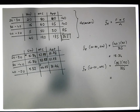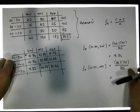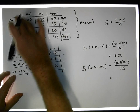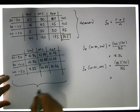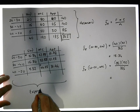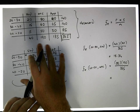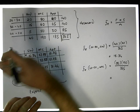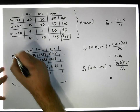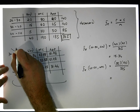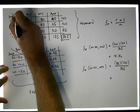We can actually start the hypothesis test now. What we've done is we know what we've observed — those are our observed values. These here are what we expect to happen if the variables are independent of each other. This is what we'd expect if the variable age was independent of the variable brand of mobile phone. Don't forget: this is age and this is brand.